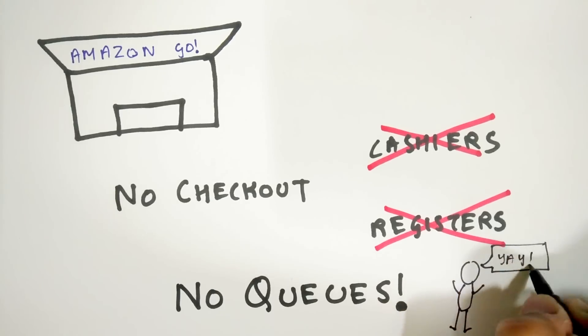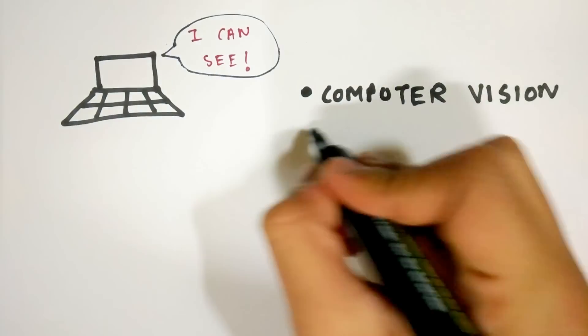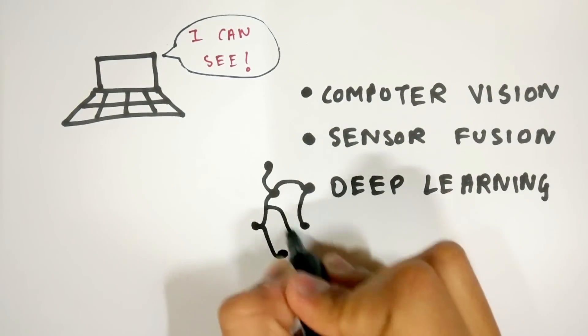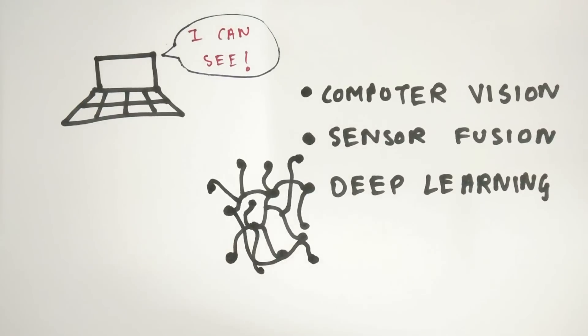Now, here's how this works. Interestingly enough, this technology is the same technology that is used in self-driving cars like computer vision, sensor fusion and deep machine learning. Amazon calls it just walkout technology and it uses lots of cameras for different purposes.